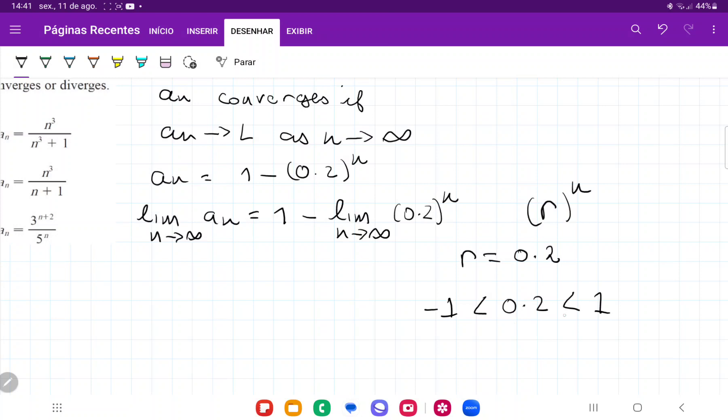And so when we have that r lies between 1 and negative 1, what is going to happen is as we raise it to infinity, so we're going to go 0.2 times 0.2 times 0.2 and so on.